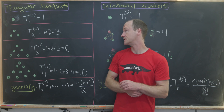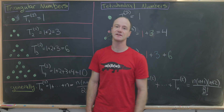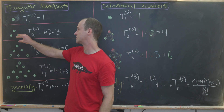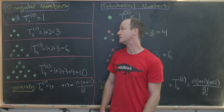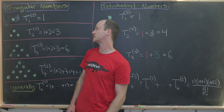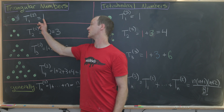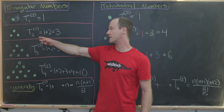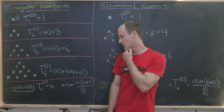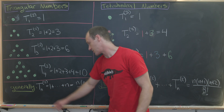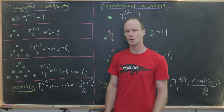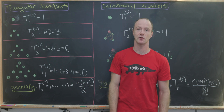I'm using a little non-standard notation here: a superscript in parentheses with a two to indicate a two-dimensional shape, like the triangle. The subscript indicates how many rows we have — one row gives subscript one, two rows gives subscript two, four rows gives subscript four. Generally, the nth triangular number is the sum one plus two plus three all the way up to n, which has the well-known closed form n times (n+1) over two.